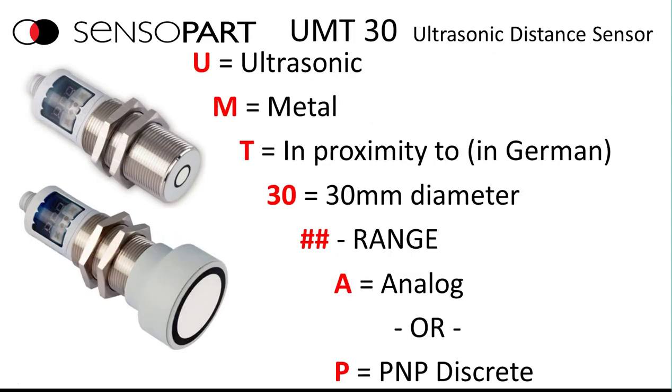The part number: U is for ultrasonic, M is for metal, T is in proximity to (in German), 30 is a 30 millimeter diameter, and the rest of the part number is the range.